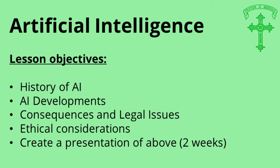Lesson objectives — these aren't for this one lesson, these are for each week. Today I'm going to ask you to look at the history of AI. Next week, the developments in AI. The week after that, the consequences of AI and the legal issues that might arise. For week four, ethical considerations. And then weeks five and six, you're going to create your own presentation.